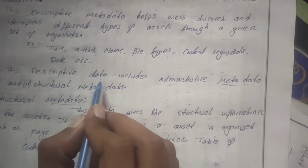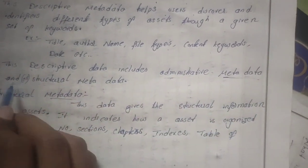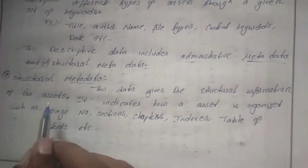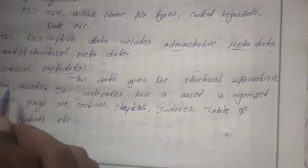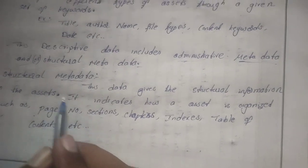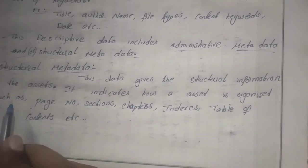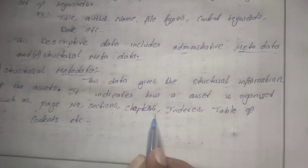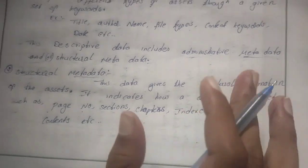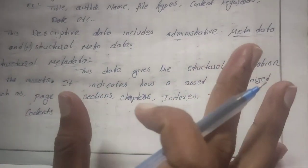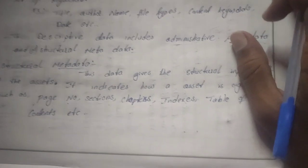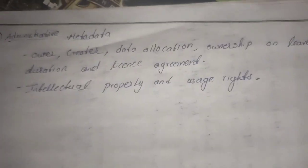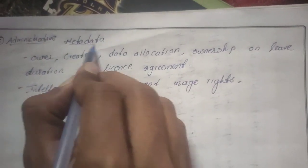Next, structural metadata — this gives the structural information of the assets. It indicates how the assets are organized, such as page numbers, sections, chapters, index, and table of contents. All of these in structural form are called structural metadata.